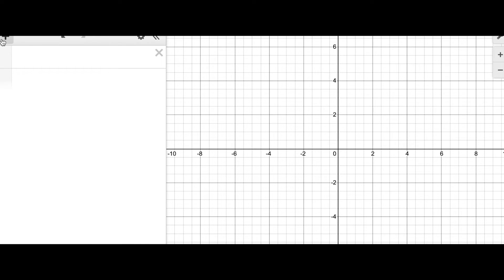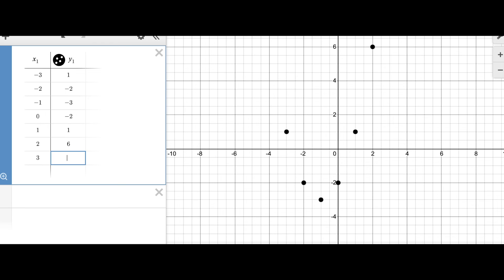We go to Desmos over here. I'm going to click on this plus sign and select table. When you go to table, all you need to do is insert what the x coordinates are and what the y coordinates are. For the first pair of coordinates, we have -3 and 1. For the second pair, we have -2 and -2. Then -1 and -3. Then 0 and -2, where our y coordinates start repeating. Then 1 paired with 1. And finally, the last two pairs of coordinates, we have 2 and 6 and 3 and 13.